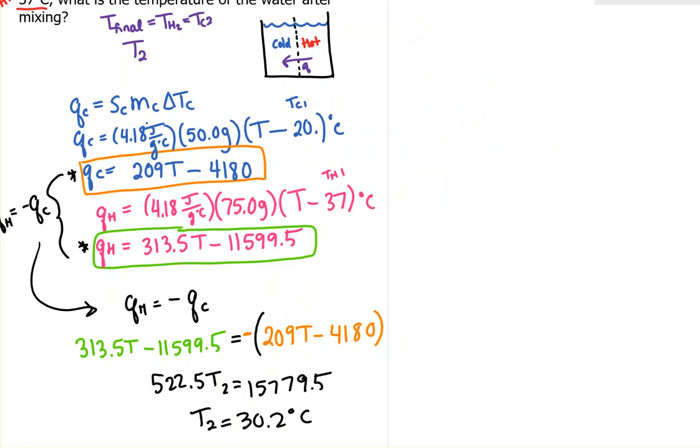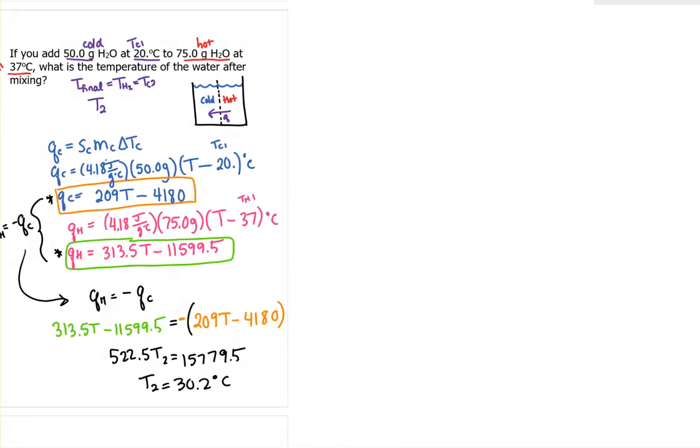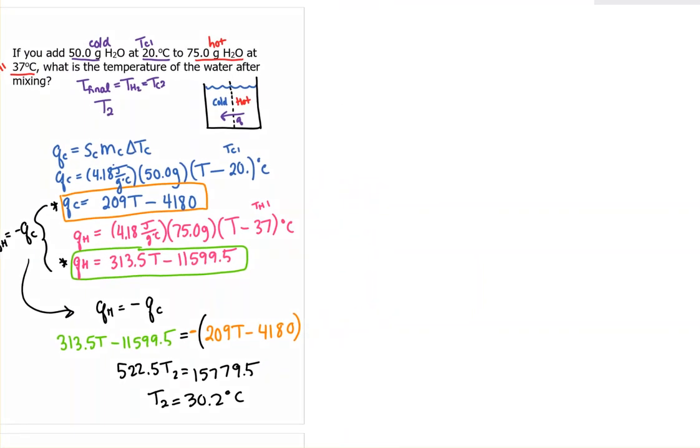A couple things. First, you probably noticed I was ignoring sig figs. When you start doing this much algebra, we're not going to keep track of sig figs on every little part. In higher classes, there's actually a fancier way to track error than just significant figures. In a case like this with so many algebra steps, just look at your answer at the end and see what makes sense with your given values.